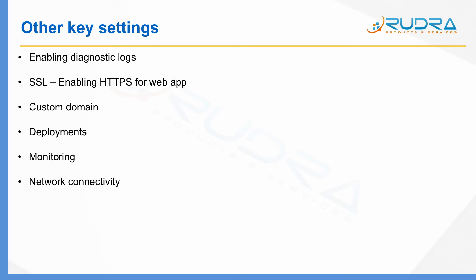In the monitoring section of the course, I'm going to take you through monitoring in detail. And finally, network connectivity — in order to make sure your app hosted in your app service is able to communicate with apps hosted in Azure virtual machines or on-premises data centers, you can configure certain connections. There are different ways to establish those connections: one is virtual network connectivity, and the second one is hybrid connections. I'm going to take you through all of these in the network section of the course.